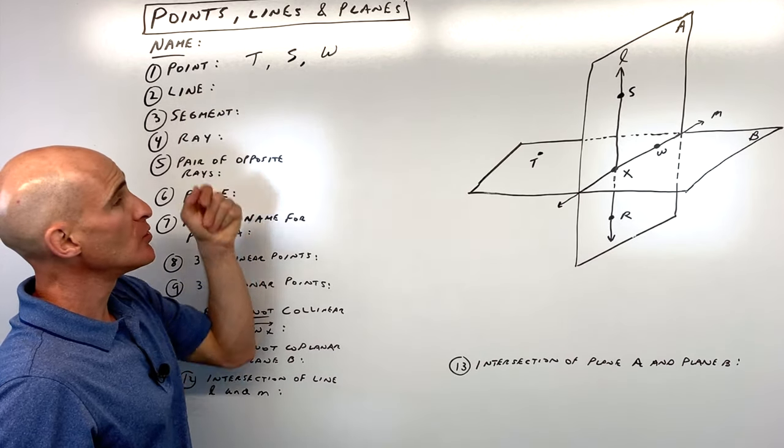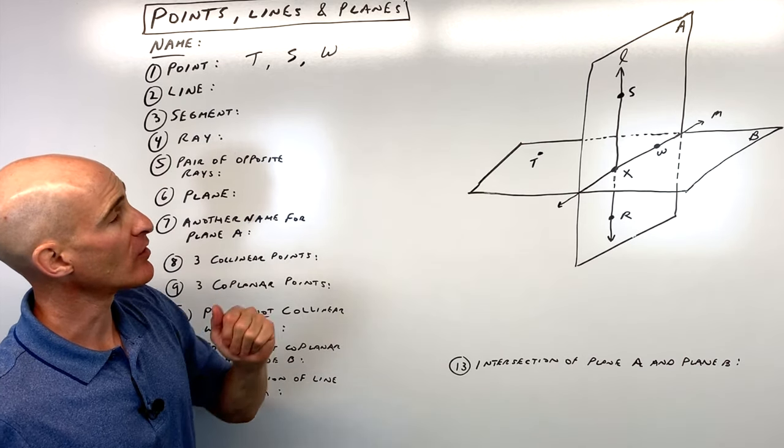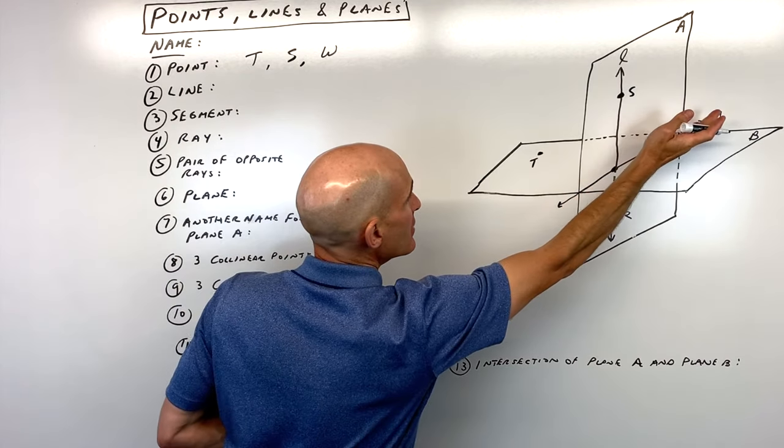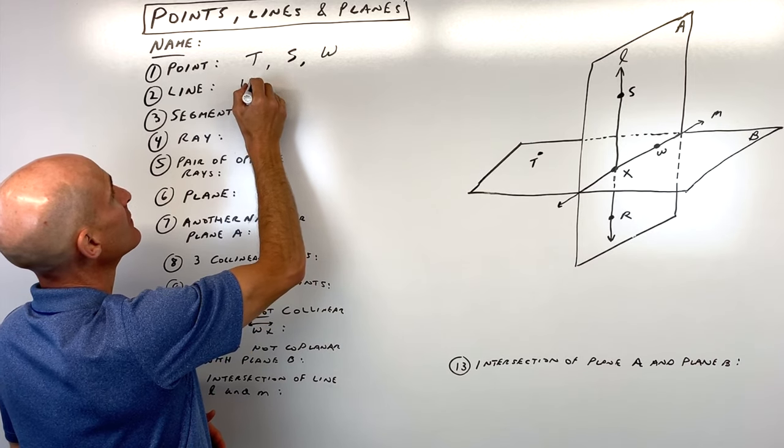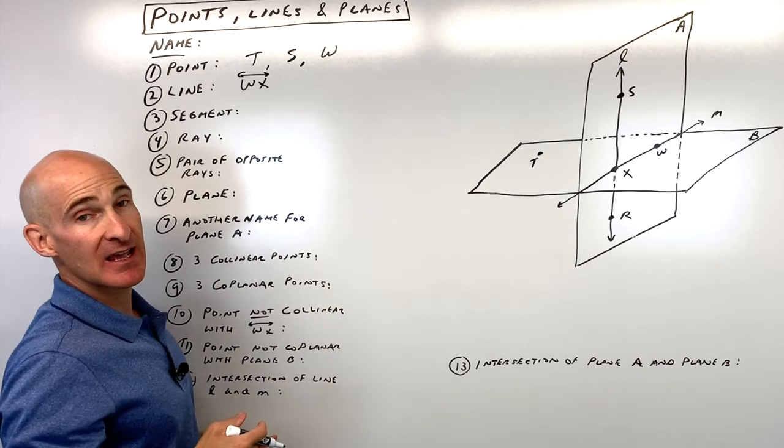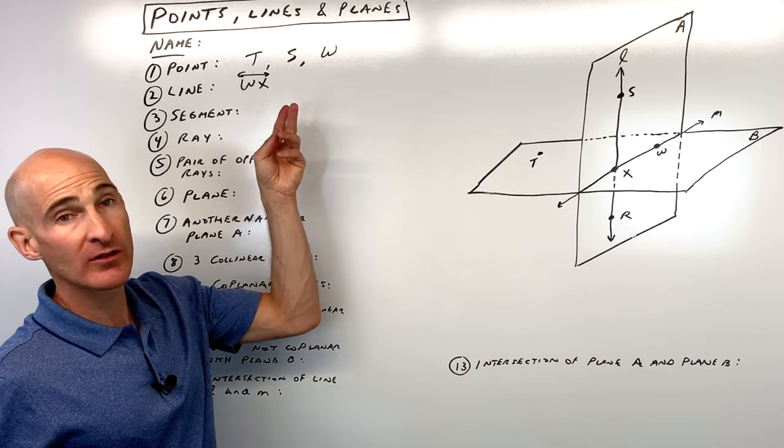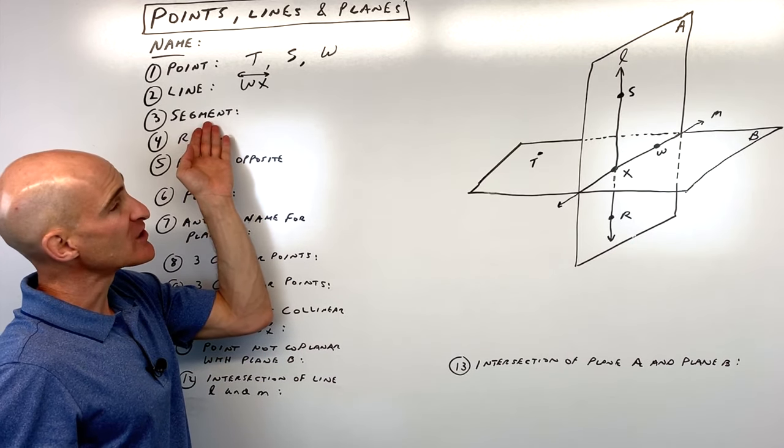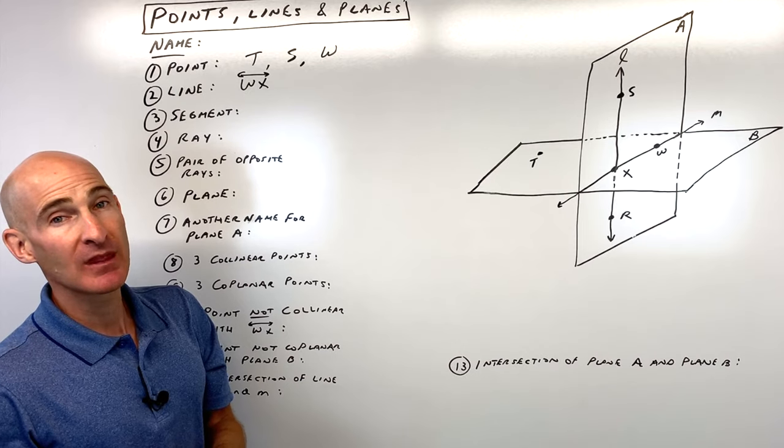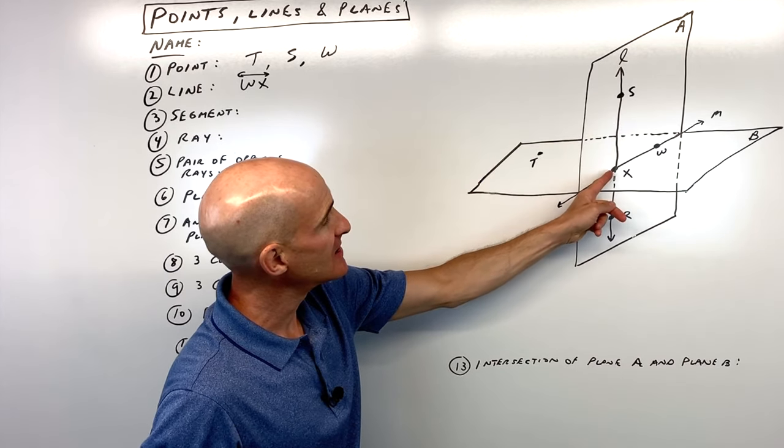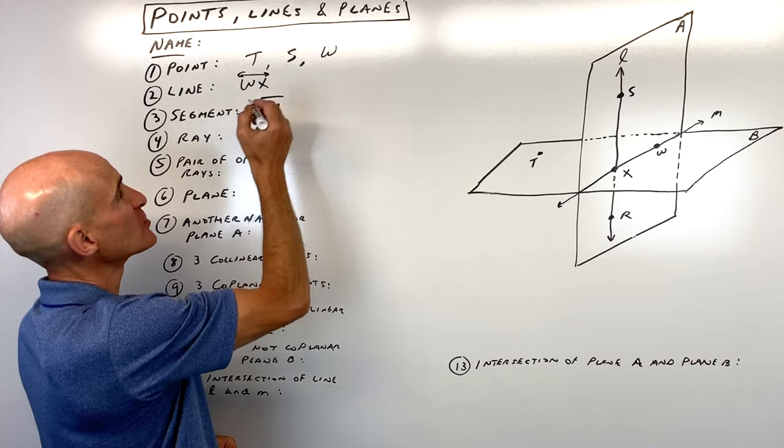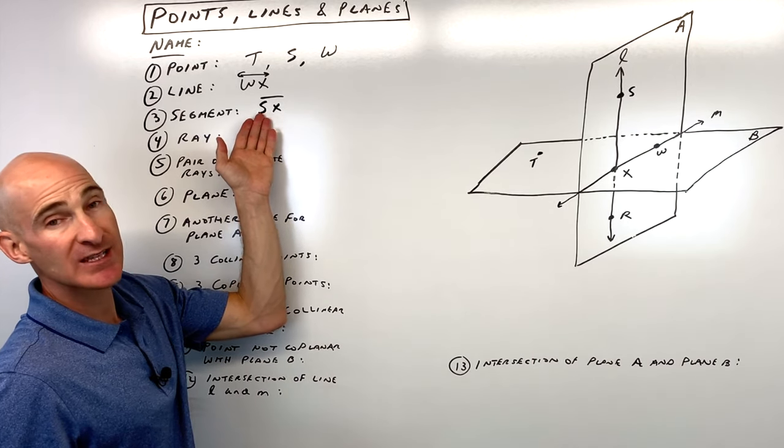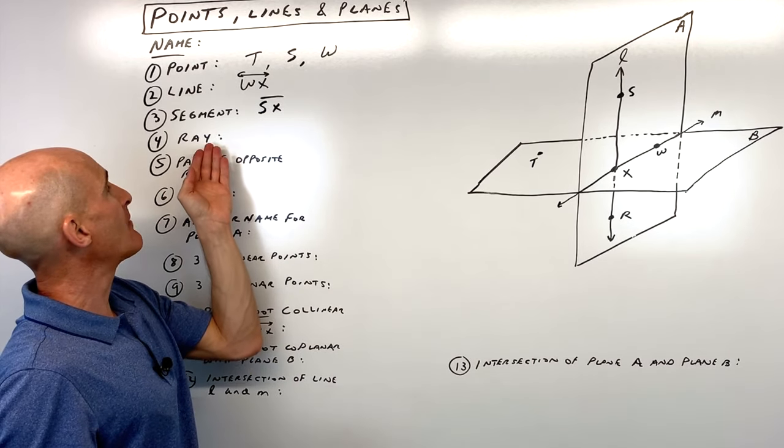For number two, you want to name a line. So what do you think a good one for a line would be? Well, there's a lot of options here. I'm going to pick maybe like this line right here, WX. And I'm going to put the line symbol above it to indicate that it's a line. That's very important. It doesn't matter the order of the points, the letters here, but you definitely want to put the line symbol above it to indicate that it's a line. For a segment, what do you think would be a good example of a segment? Well, how about if we do from S to X? So that would be SX. We'll just put a bar above it. Now your teacher is going to be very particular about this notation. So you want to make sure you really get a good grasp of this. Don't be too sloppy with it.